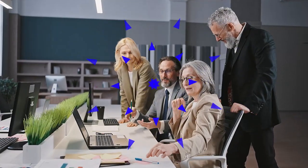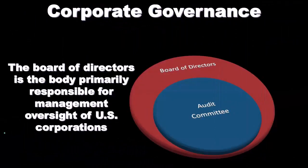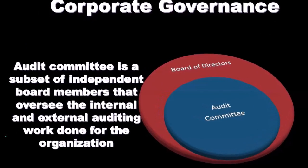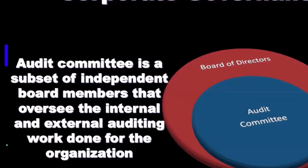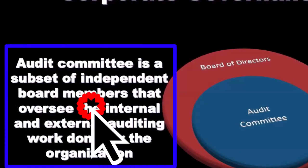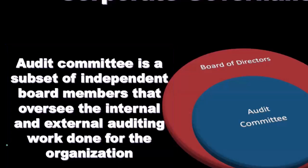The board of directors is responsible for hiring management, evaluating the decision-making process of management, and overseeing it. The audit committee is a subset of independent board members that oversees the internal and external auditing work done for the organization.